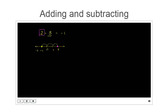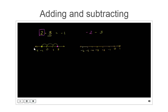Now let's mix it up a little bit. What about negative 2 minus 3? Let's draw a number line with 0, 1, negative 1, negative 2, negative 3, negative 4, negative 5, negative 6. We're starting at negative 2, and then we're subtracting 3 again, so we move 3 to the left of negative 2: 1, 2, 3 — and we end up at negative 5.